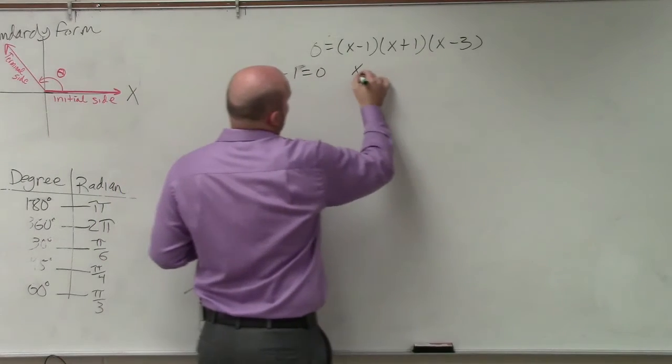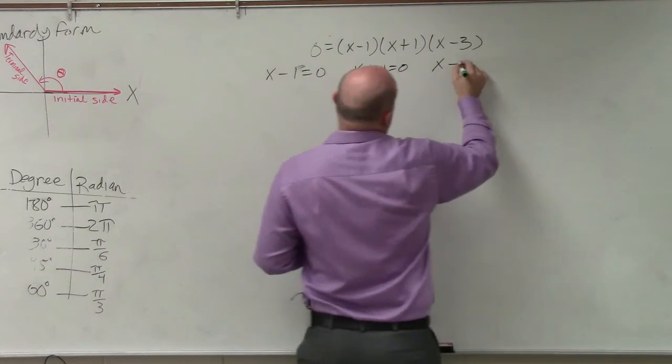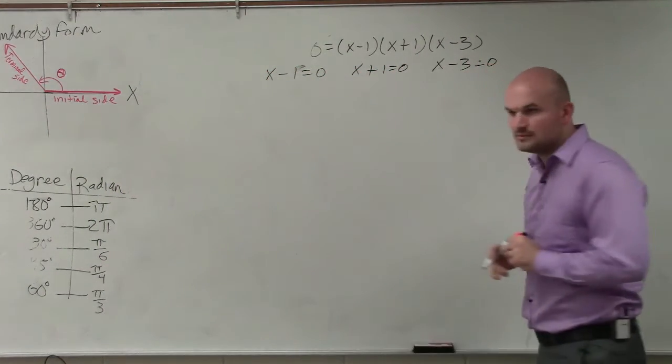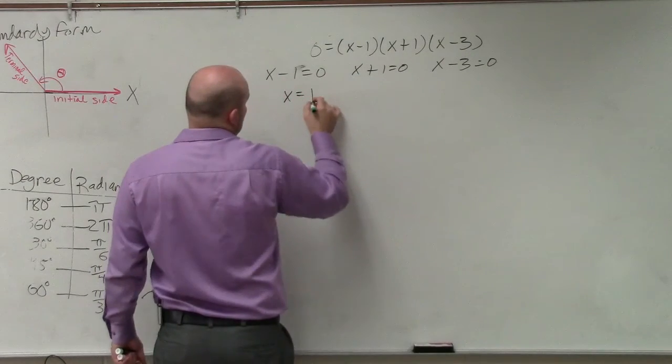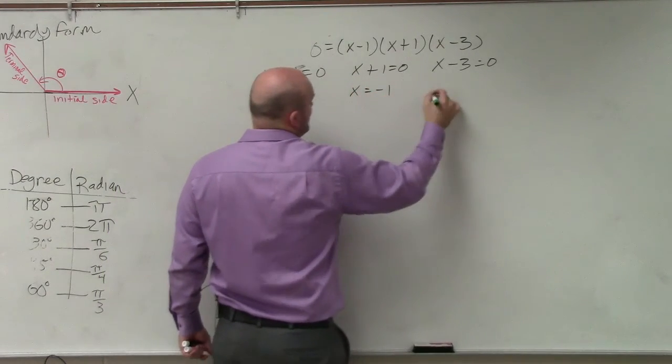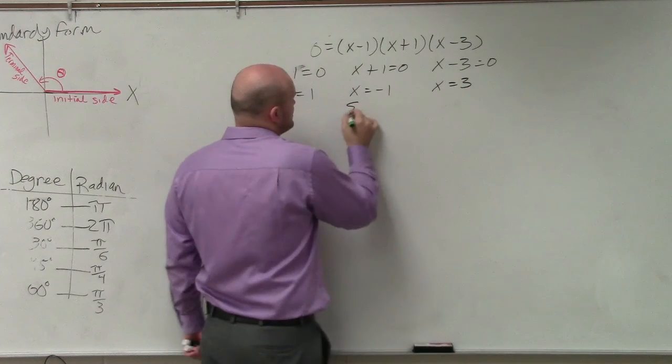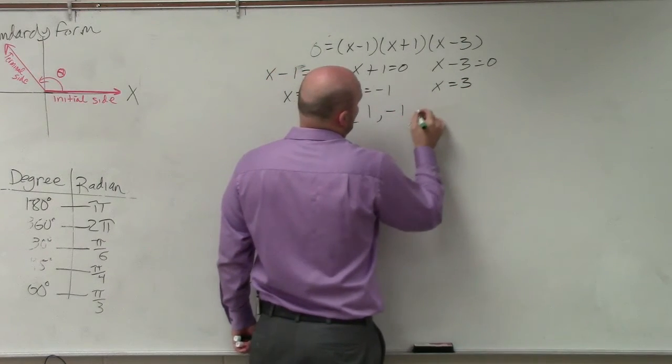x minus 1 equals 0, x plus 1 equals 0, and x minus 3 equals 0. And then we can solve, and we know our solutions are going to be x equals 1, x equals negative 1, x equals 3. So the solution set is 1, negative 1, and 3.